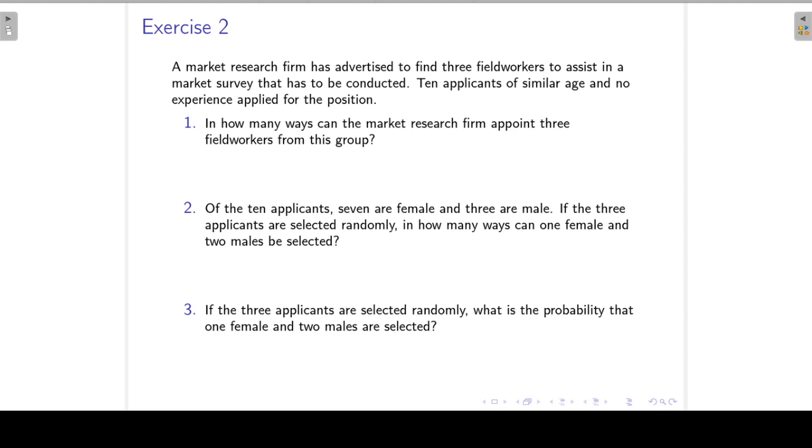So that is then 10 combination 3, which equals 10 factorial over 10 minus 3 factorial times 3 factorial. And again, the seven factorials can cancel out. So we have 720 divided by 3 factorial, which is 6. That's equal to 120.